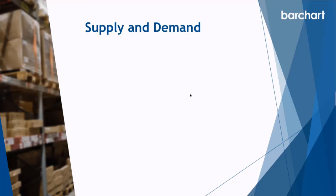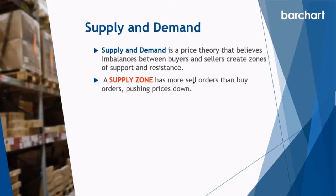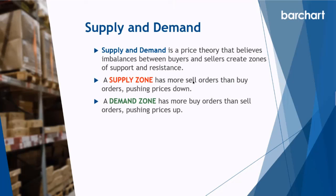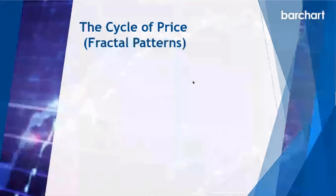A supply zone is where there are more sell orders than buy orders, which is why price falls, and a demand zone is the opposite. What we're going to look at is that these zones can be found in all timeframes, and that classic candlestick formations are evidence of these imbalances between buyers and sellers — again, remember what Nison said about sentiment bias. So what are the fractal patterns we're going to look at inside our markets?